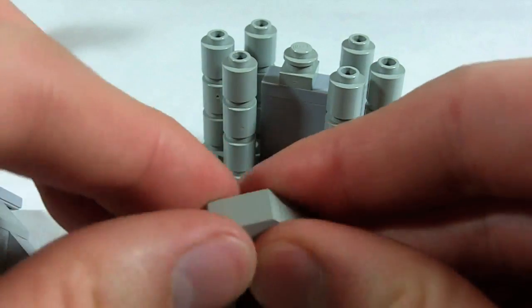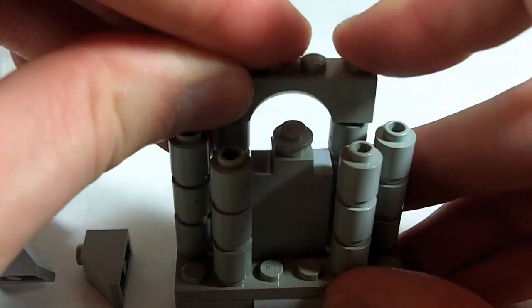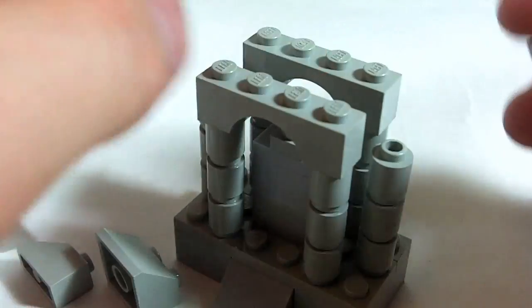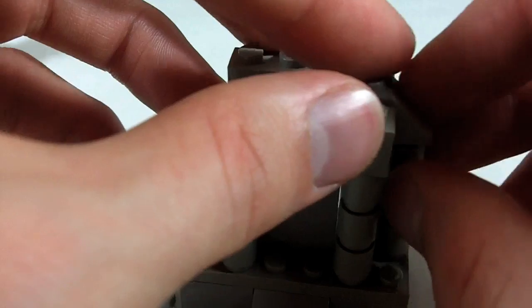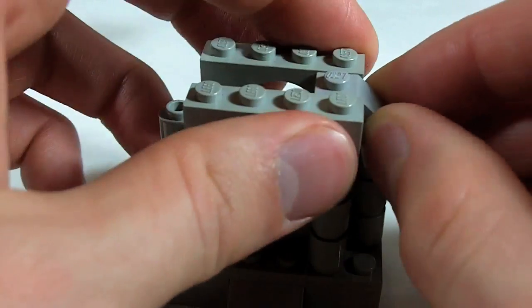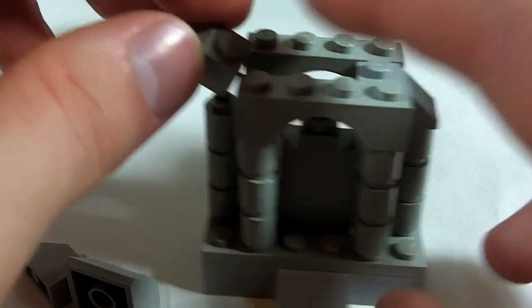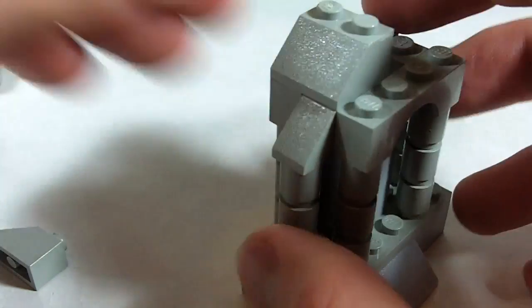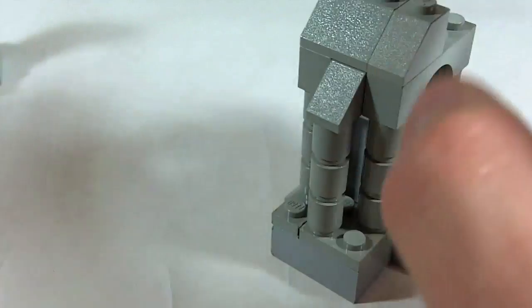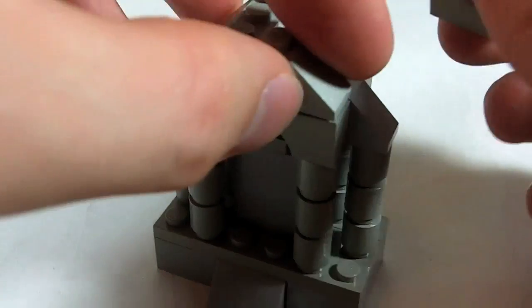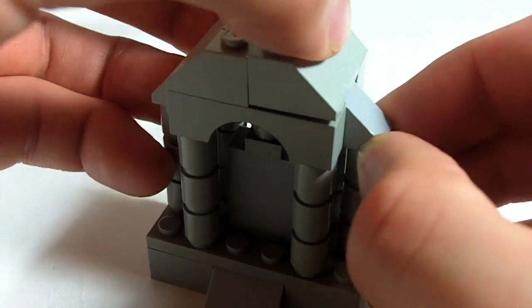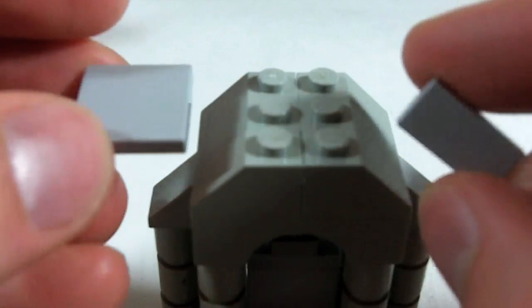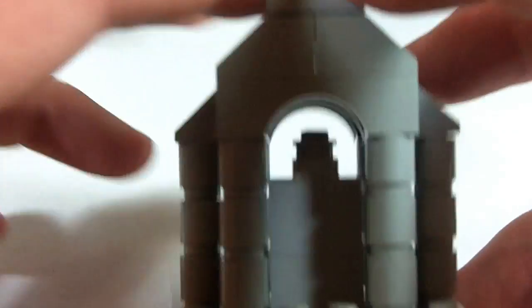Then some 1x4 arches. So yeah, I just Googled graveyards online and was looking at different types of headstones. Sorry, this is a 1x2 slope. One there, one there. And then across the top, that's a 2x2 and a 1x2. If you have 2x3s, you could use that as well. And then 2x2 tile to top it off. Then you've got your gravestone.